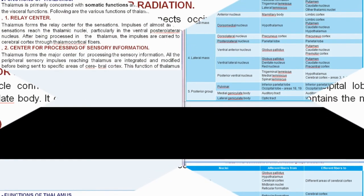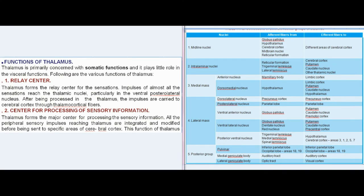Functions of thalamus: thalamus is primarily concerned with somatic functions and plays little role in visceral functions. First, relay center — thalamus forms the relay center for sensations. Impulses of almost all sensations reach thalamic nuclei, particularly the ventral posterolateral nucleus. After being processed in the thalamus, impulses are carried to the cerebral cortex through thalamocortical fibers. Second, center for processing of sensory information — thalamus forms the major center for processing sensory information. All peripheral sensory impulses reaching thalamus are integrated and modified before being sent to specific areas of cerebral cortex.